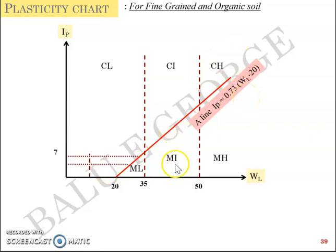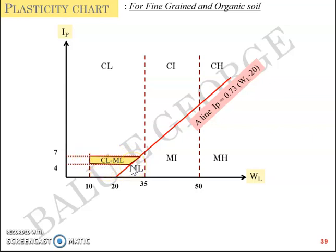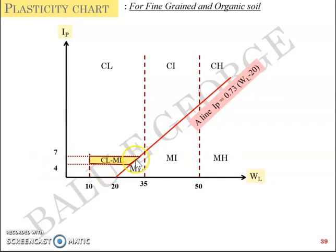There is one more important point: horizontal lines at Ip = 4 and Ip = 7 create a special zone, along with wL = 10. Soil in the range where Ip is between 4 and 7 and liquid limit is greater than 10 but falls above the A-line is given the dual classification CL-ML — meaning low plasticity clay and silt. L applies because it's to the left of wL = 35, so that zone receives the dual symbol CL-ML.